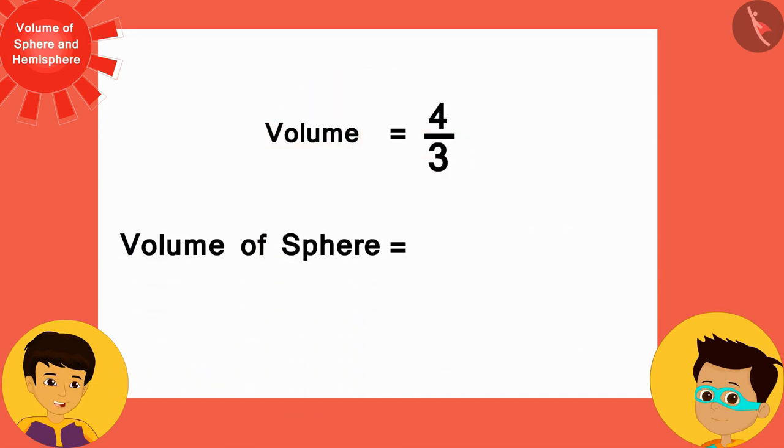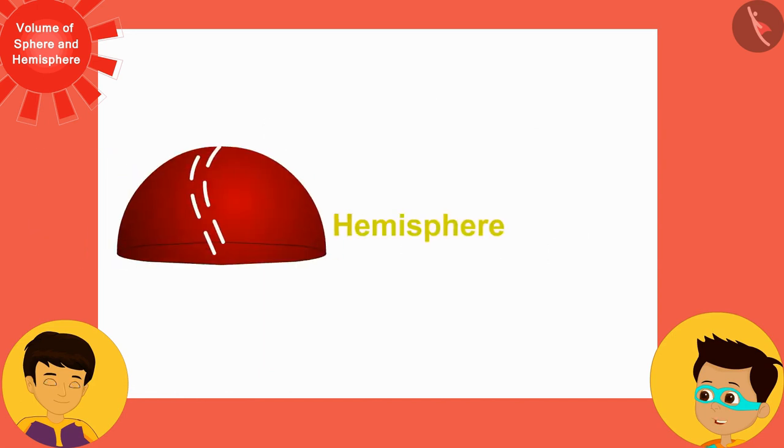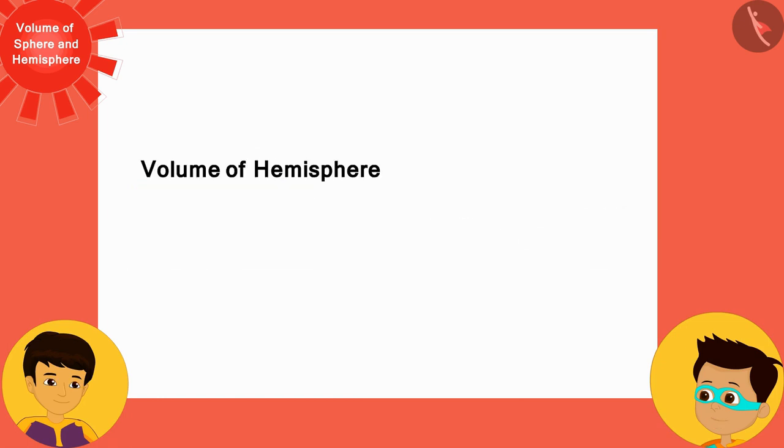Hey wow, Manas! The hemisphere is half of sphere, is it not? This means that we can write the formula of volume of hemisphere in this way by dividing the volume of the sphere by two, where r is the radius of the hemisphere.